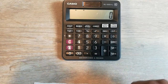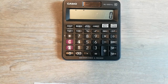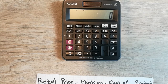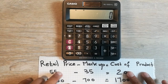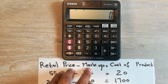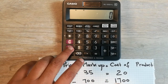Hello guys, I hope you are doing really well. Today I'm going to tell you how you can find out the cost of a product. There is a formula for this — I'll show you here: Retail Price minus Markup equals Cost of Product.